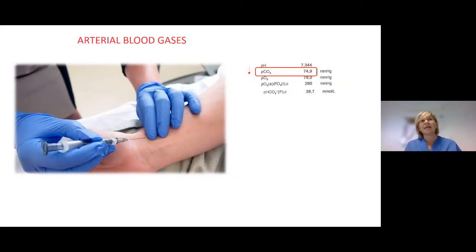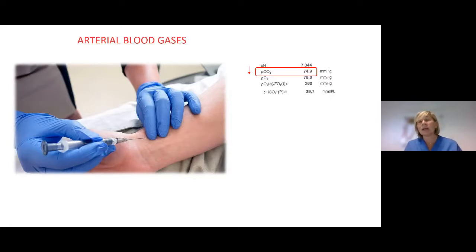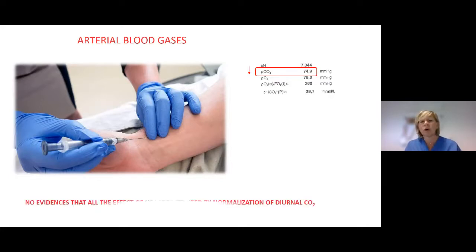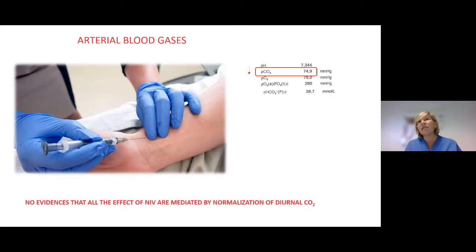We know that the first criterion to include a patient in home non-invasive ventilation is chronic hypercapnia. So the main outcome is to reduce diurnal pCO2, and arterial blood gases is one of the most important ways to measure and monitor these patients.